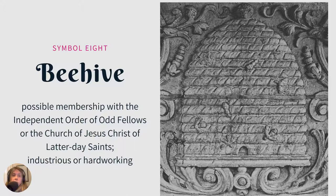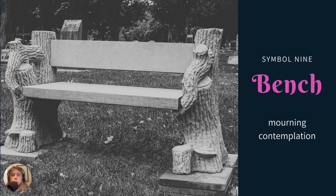A beehive has a couple of different possibilities: membership in the Independent Order of Odd Fellows (abbreviated IOOF), which was a fraternal society popular back in the 1920s; membership in the Church of Jesus Christ of Latter-day Saints, who sometimes use beehives on tombstones; or it could represent a personality trait — the person could have been industrious or hardworking.